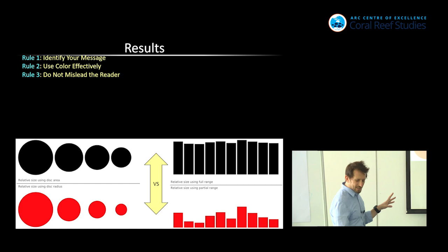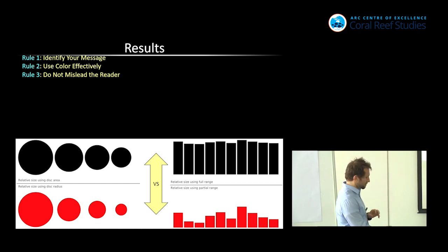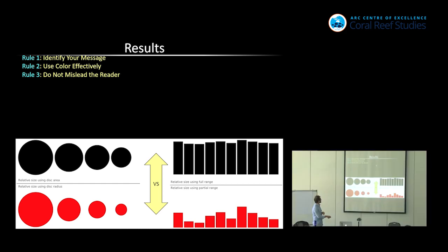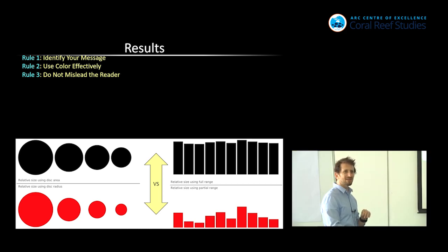So rule three, do not mislead the reader. What I want to get at here is that the red ones are slightly misleading, in that this is the relative difference if you only show the top. And you often see this in newspapers or something. They don't actually show you the full range of the bar graphs. They only show you the top, and they say, oh my god, this one's so much more. When you see the whole range there, you're actually like, there's no difference between those. But by showing only the partial range, you're actually misleading about this.